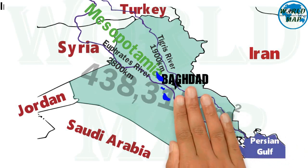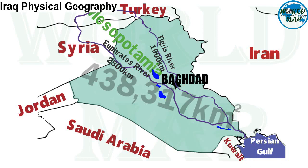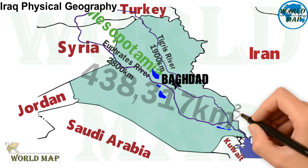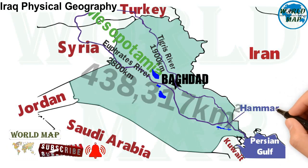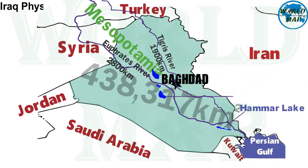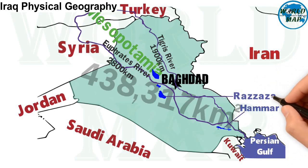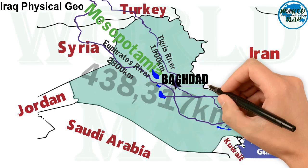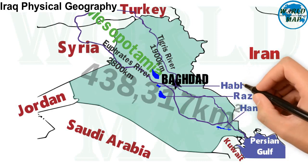Famous lakes of Iraq: Lake Hamar is a saline lake in the southeastern part of Iraq within the Hamar marshes. Lake Ras, also known as Lake Mile, is a sea of salt located a few miles west of Karbala. Lake Havaniya is a lake located near the banks of the Euphrates.